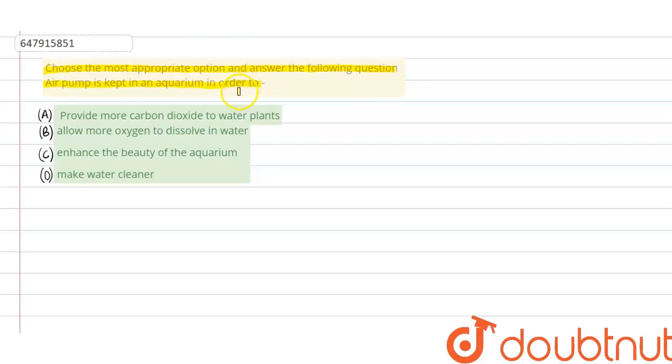So what do you keep an air pump in the aquarium? The options are: provide more carbon dioxide to water plants, allow more oxygen to dissolve in water, enhance the beauty of aquarium, and option D is make water clear.